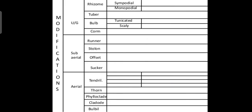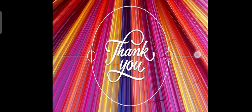To summarize the modifications: underground modifications include rhizome, tuber, bulb, and corm — with rhizome being sympodial or monopodial, and bulbs being tunicated or scaly. Sub-aerial modifications include runner, stolon, offset, and sucker. Aerial modifications include tendrils, thorn, phylloclade, cladode, and bulbil. You can make a flowchart to remember the characteristics of each. If you have any doubts, you can ask in Google Classroom. Thank you.